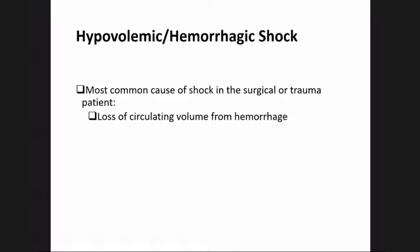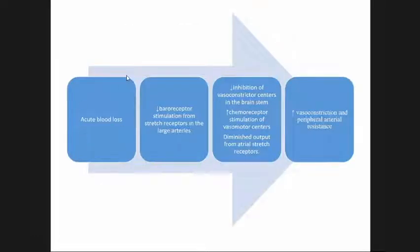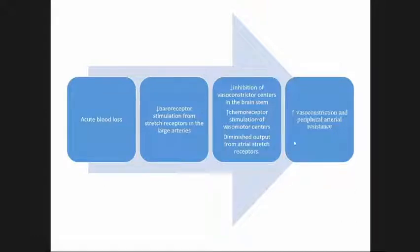Forms of shock — hypovolemic or hemorrhagic shock: this is the most common cause of shock in surgical or trauma patients, resulting from loss of circulating volume from hemorrhage. Acute blood loss results in reflexive decreased baroreceptor stimulation from stretch receptors in large arteries, resulting in decreased inhibition of vasoconstrictive centers in the brainstem, increased chemoreceptor stimulation of vasomotor centers, and diminished output from atrial stress receptors. These changes result in increased vasoconstriction and peripheral arterial resistance.